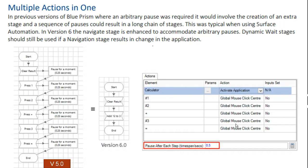After each step, you can configure the time span or seconds you want to wait — for example, after the activated application completes, the next action will run after 0.5 seconds or whatever you configure. This way you can reduce the number of stages: start, clear result, press 1, press 2, press 3, add 1+2+3, end — everything in one sequence. Your actions and stages will be reduced significantly, and you can complete your process or page within just 2 or 3 actions.